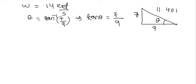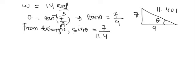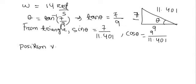So now from triangle, sin theta is equal to 7 by 11.401 because perpendicular by hypotenuse, and cos theta is equal to base upon hypotenuse, so 9 by 11.401. Now position vector of point P is R is equal to 26i cap plus 36j cap minus 28k cap.